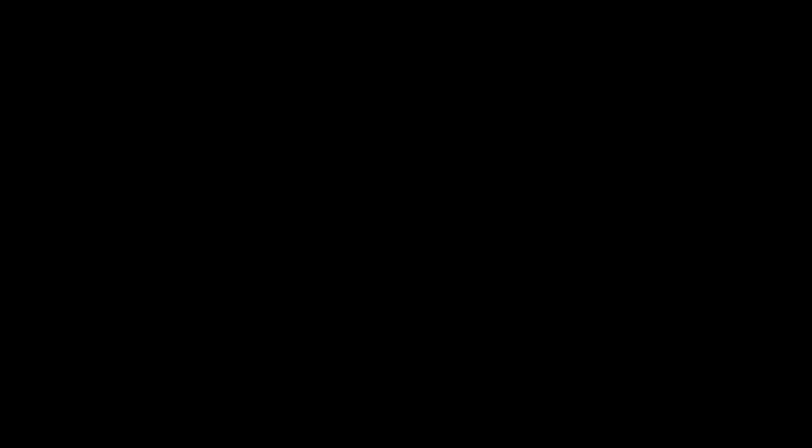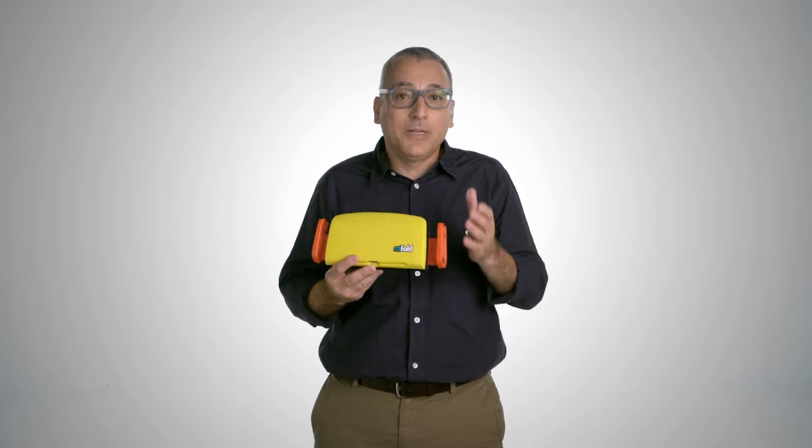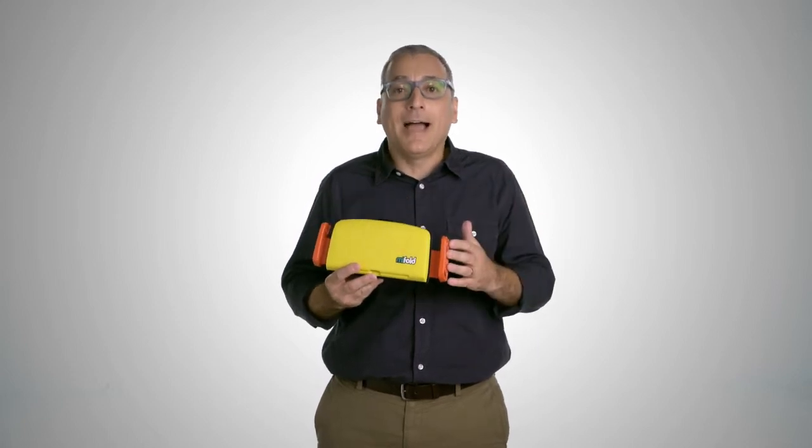Once you know the correct position of the lap belt guides for your child, you'll not need to repeat this step with the child sitting on the booster seat. You can simply set the lap belt guides to the correct position and adjust out as the child grows.